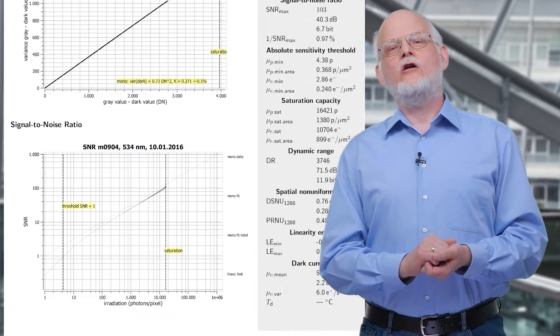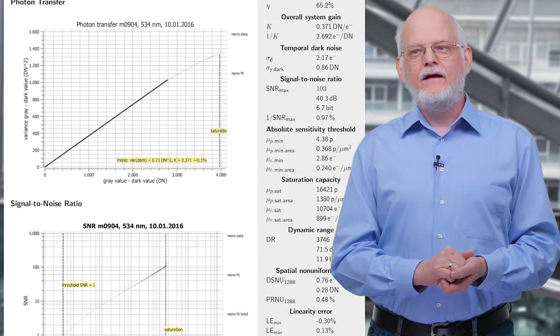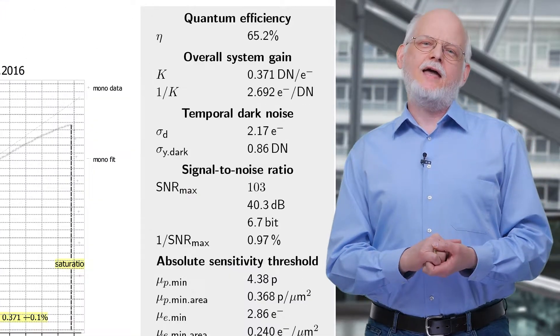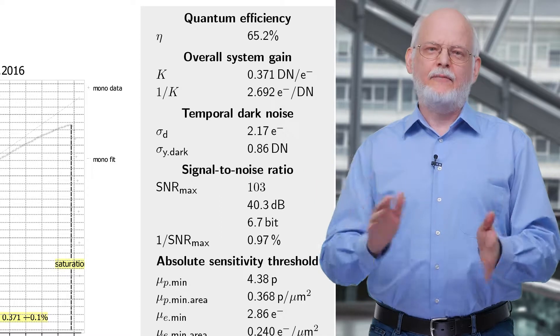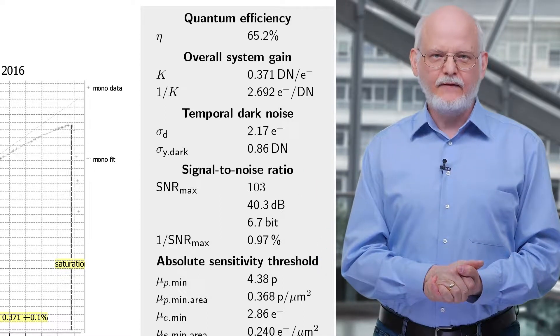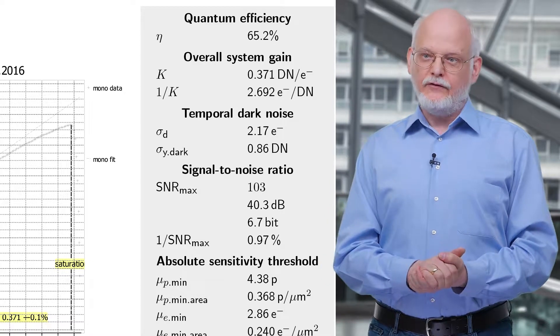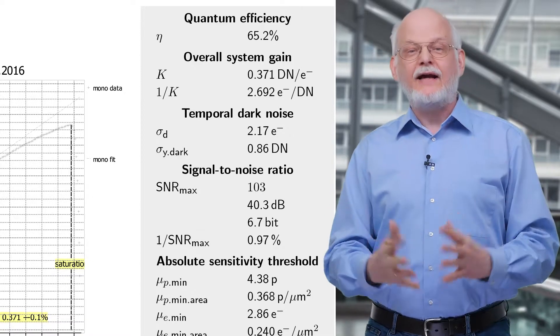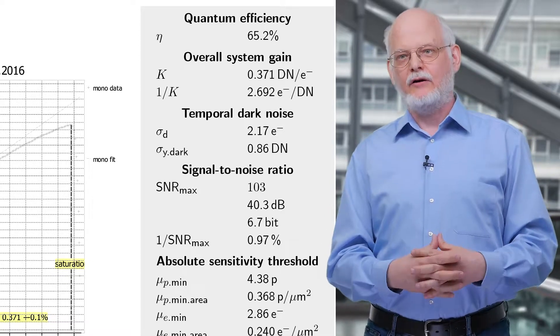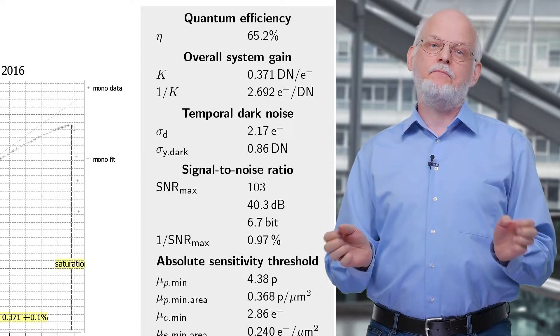Then, on a column on the right side, all EMVA 1288 parameters are listed. It starts with the three basic parameters, which come directly from the linear camera model, on which the standard is based upon.